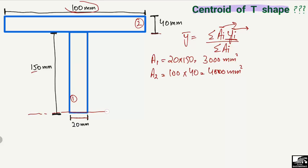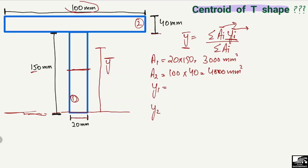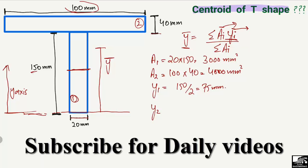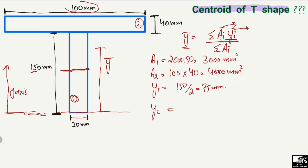We take the bottom of the beam as the reference axis. ȳ is the overall centroid we want to find, while y1 and y2 are the centroids of each individual object. The centroid of the first object, y1, is measured from the bottom: y1 = 150 / 2 = 75 mm.